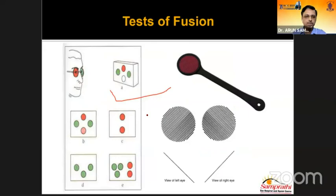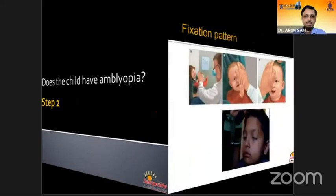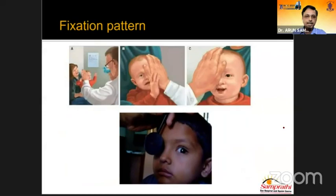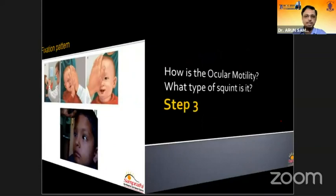These are the different tests used for diagnosis of binocular vision. The Titmus flight test is most commonly used. The Worth four-dot test, available in our ophthalmic units, tests peripheral fusion at distance and foveal fusion at near. The next step is to diagnose whether the child has amblyopia. The fixation pattern is very important — if the child is not fixing properly or has fixation preference to one eye, that indicates a problem with vision.